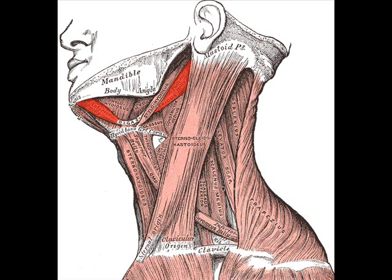A broad aponeurotic layer is given off from the tendon of the digastricus on either side, to be attached to the body and greater cornea of the hyoid bone. This is termed the suprahyoid aponeurosis. The digastric muscle consists of two fleshy bellies united by an intermediate rounded tendon.